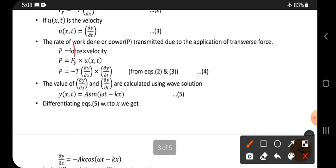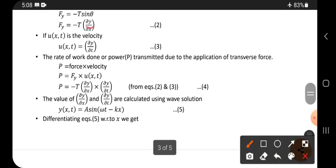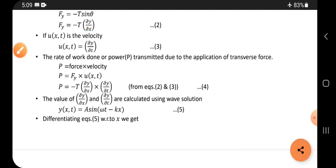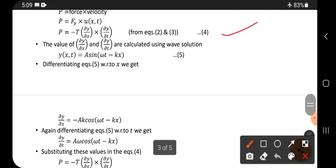P equals the upward force Fy, and velocity is given here. So their values: Fy is this one, and u value is this one. Substitute these two values here. Let it be equation 4.